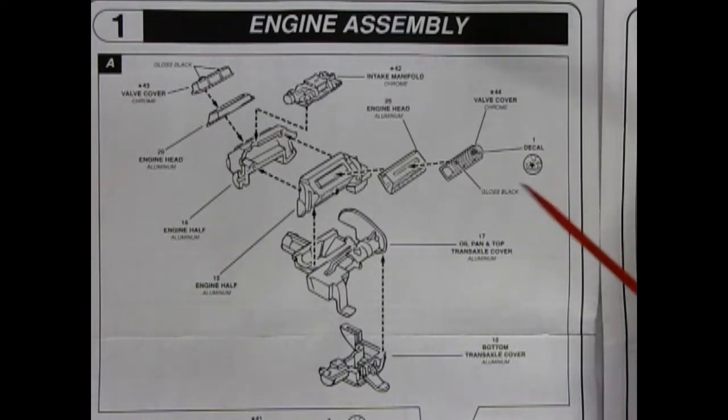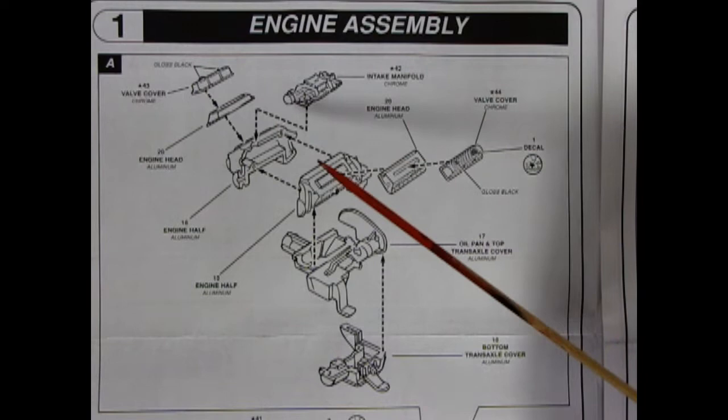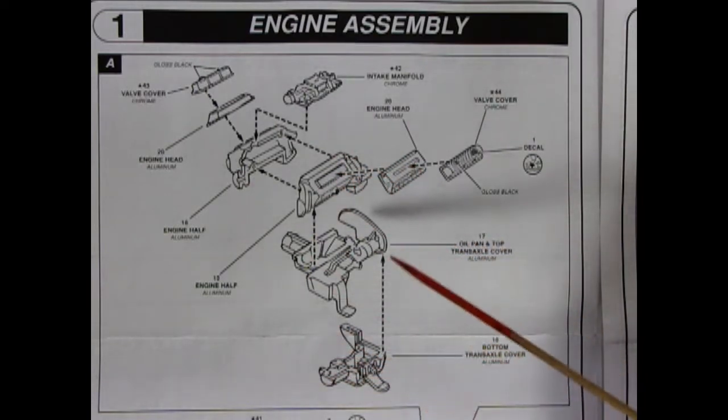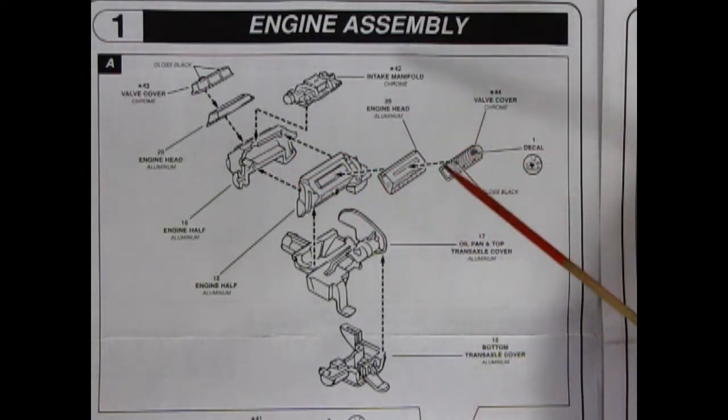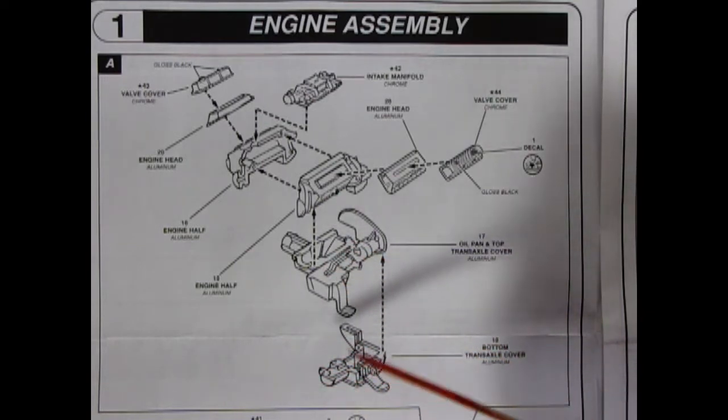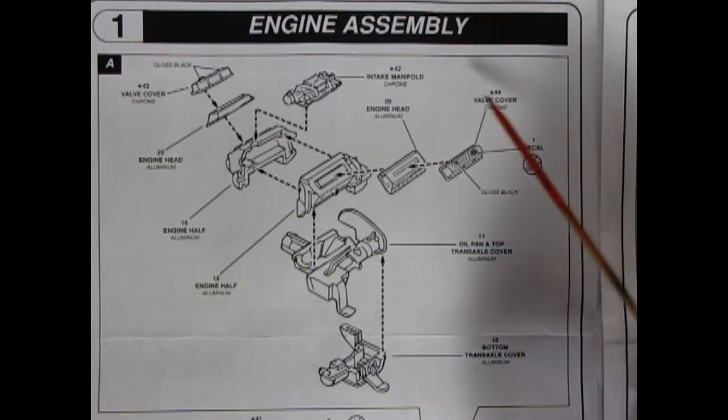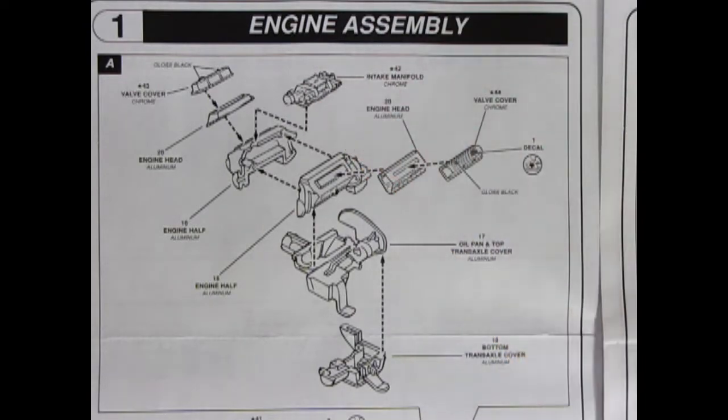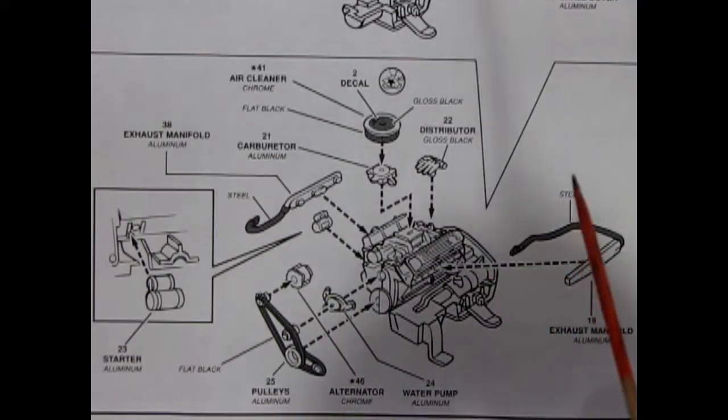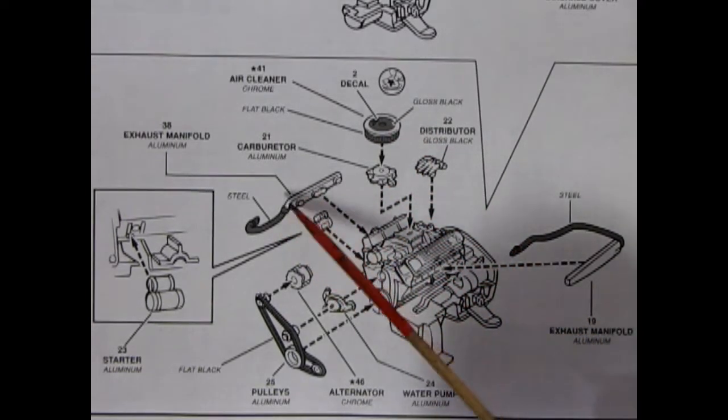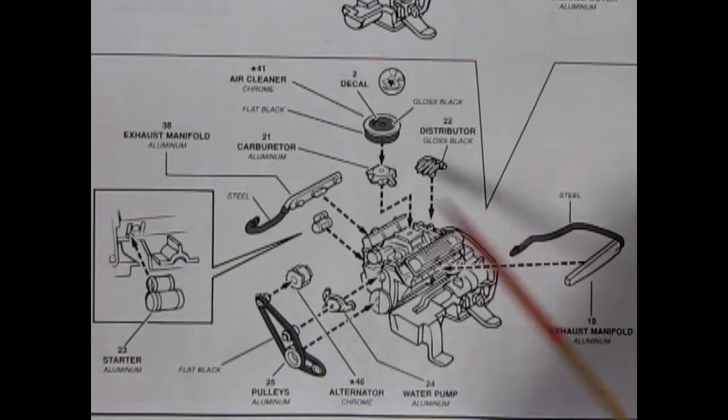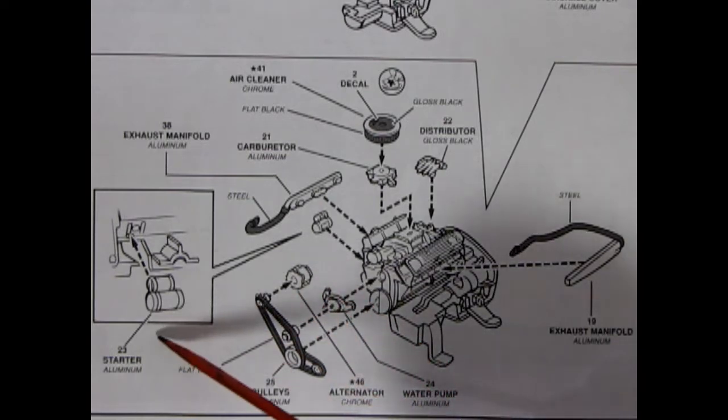Panel 1a shows our assembly for our 400 cubic inch Chevrolet motor which was specifically designed as a mid-engine motor for this particular car. As you can see we've got our right and left hand side engine block gluing together. Then we have an oil pan and top trans-axle cover as well as the bottom trans-axle cover. Then our cylinder heads and our valve covers as well as our special intake manifold for this engine. Panel 1b completes our engine with this special air cleaner, carburetor, distributor, and exhaust manifolds both right and left hand side with these steel pipes going around them, as well as our pulleys and our front water pump and alternator and the starter motor.